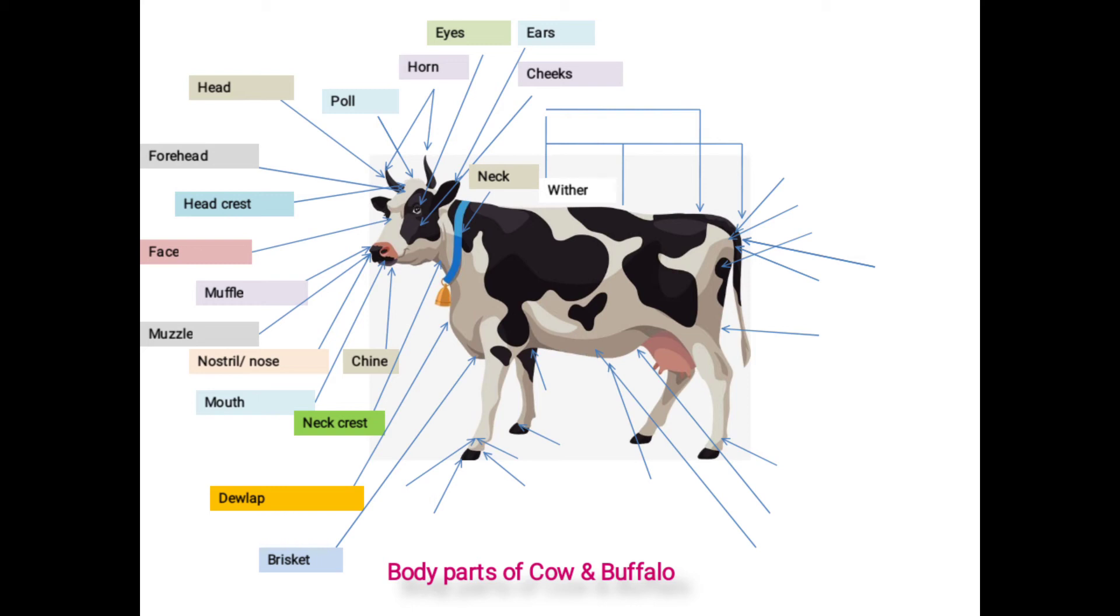Next one is back. Top portion situated between the hump and sacrum supported by ribs called as back. It includes chine: this portion just behind the hump and up to the point where last two ribs meet.